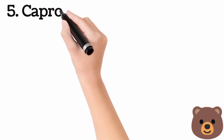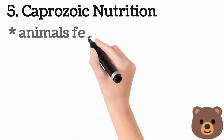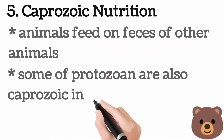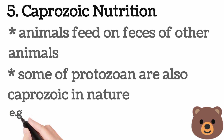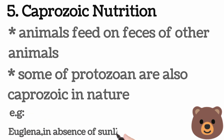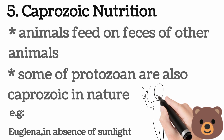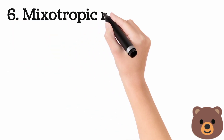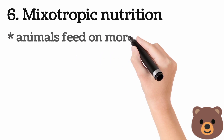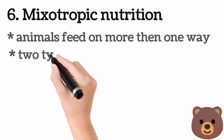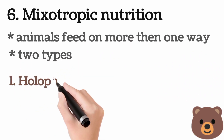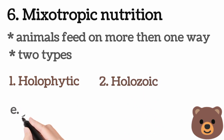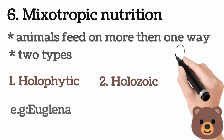Number five is coprozoic nutrition: the animal feeds on feces of other animals, and some protozoa are coprozoic in nature. For example, Euglena in the absence of sunlight acts as coprozoic. Number six is mixotrophic nutrition: the animal feeds in more than one way. Two types — holophytic and holozoic. Euglena also acts as both holophytic and holozoic.